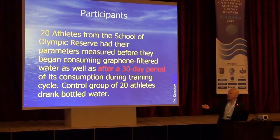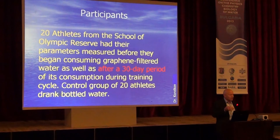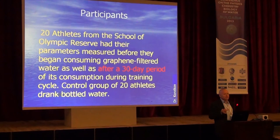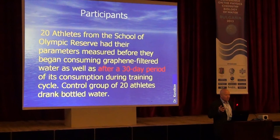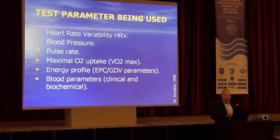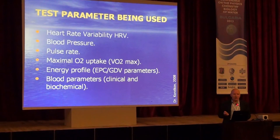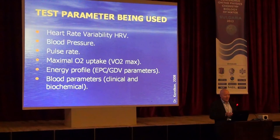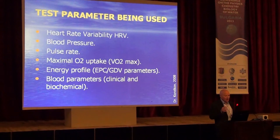In one experiment I'll show you, we had 20 athletes from the school of Olympic research. They were measured initially, and then for a certain number of days they drank special water processed with a graphene filter. A control group drank normal water from ordinary filters. We measured a standard set of parameters: obligatorily HRV (heart rate variability) — a very sensitive parameter giving information about sympathetic and parasympathetic nervous system activity — plus blood pressure, pulse rate, oxygen uptake, and energy profile with GDV. In some cases we also measure blood parameters, clinical and biochemical parameters, and immune structures.